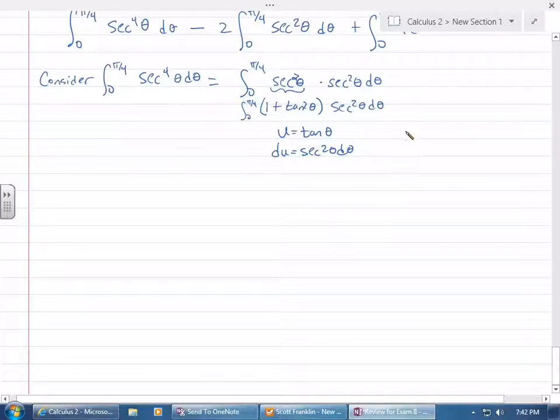I can also change the limits. This now gives me integral of 1 plus u squared du. So if I want to change my limits here, what's u of 0?